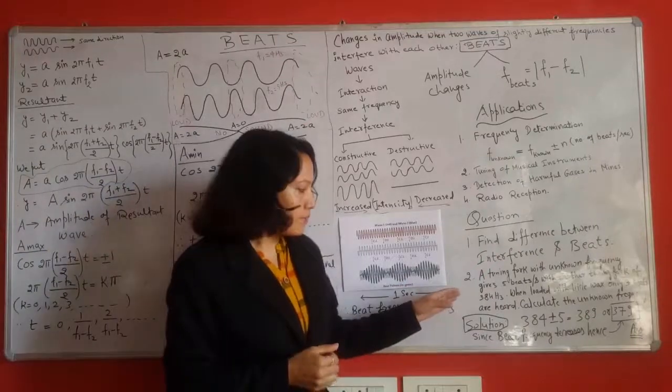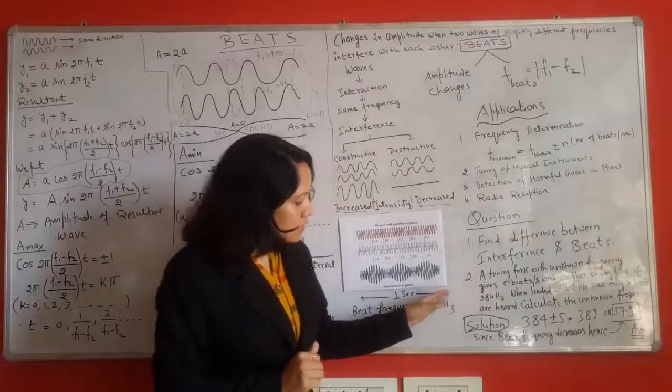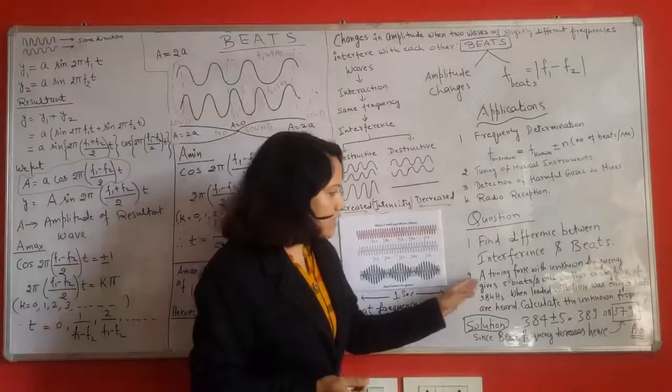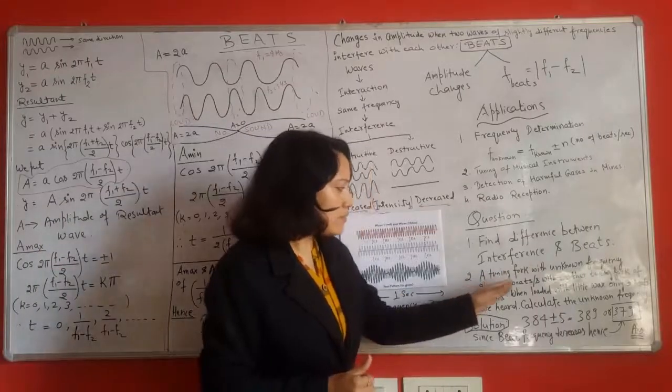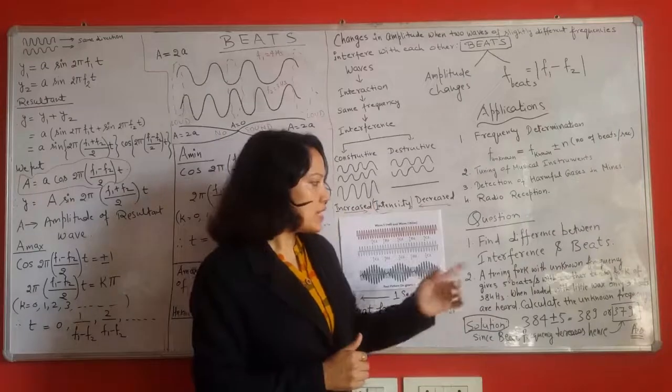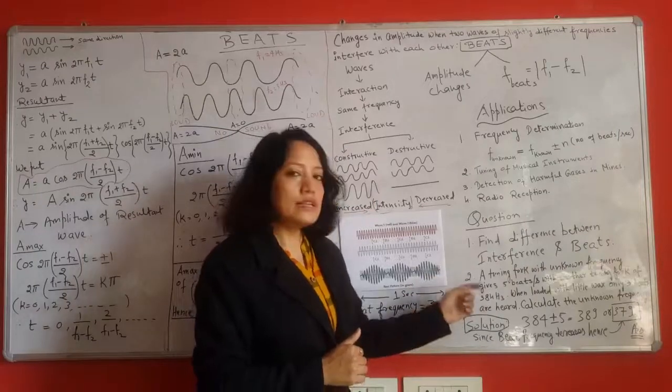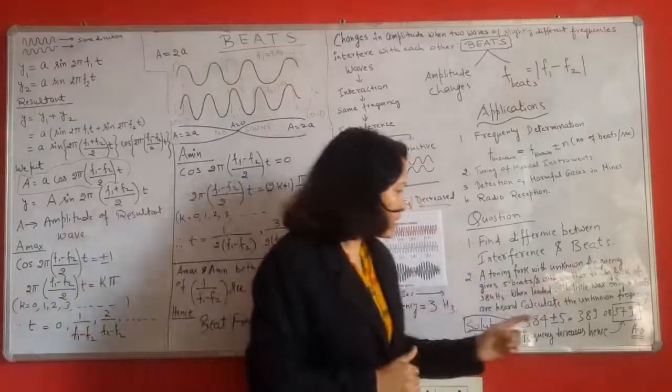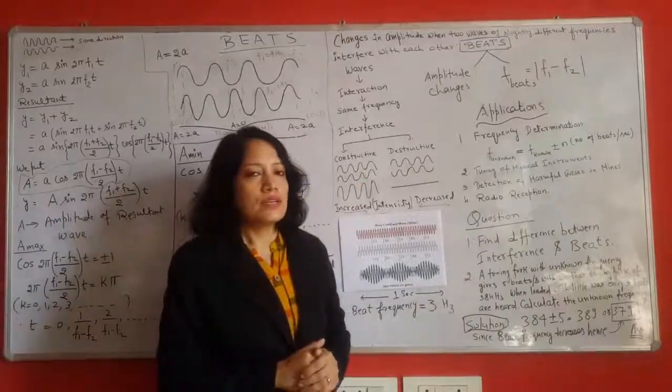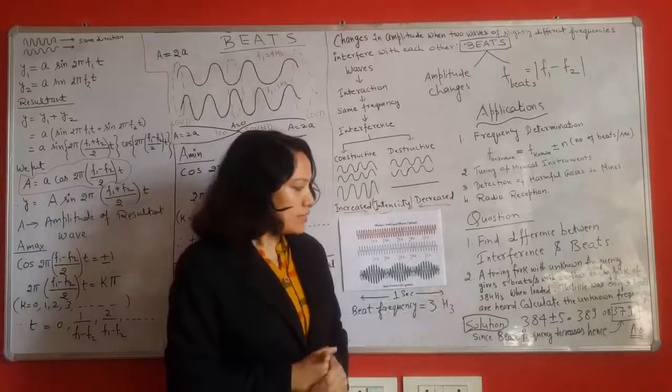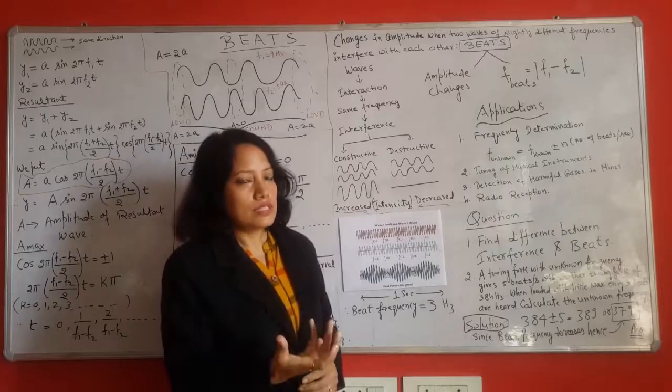Now let us come to the second example. In this example a tuning fork with unknown frequency gives 5 beats per second with another tuning fork of 384 hertz. When loaded with little wax only 3 beats are heard. In this case you have to find out the frequency of the source.